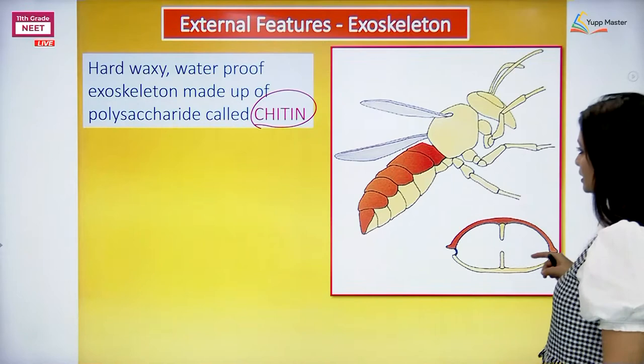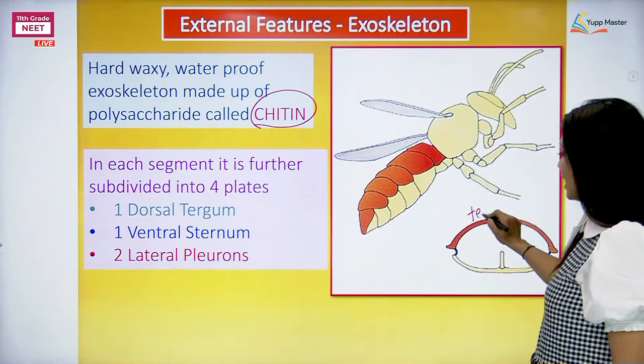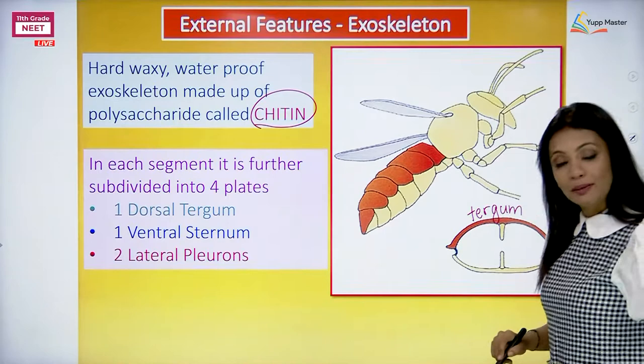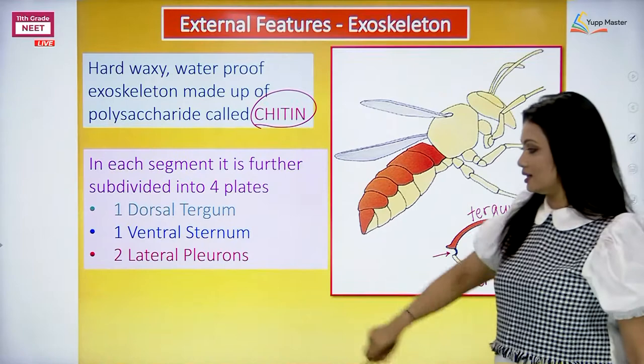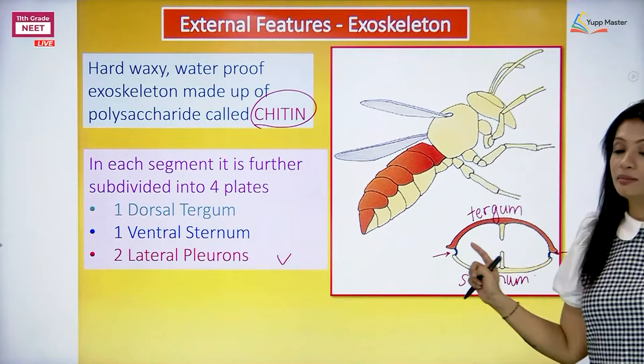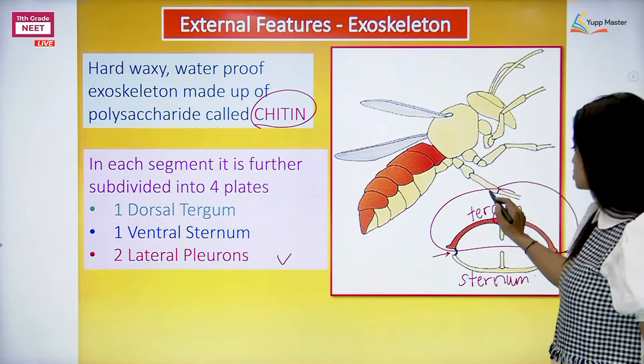When we talk about the exoskeleton - that is chitin - the dorsal part was called the dorsal tergum and the ventral part was called the ventral sternum. The lateral parts were called the lateral pleuron. When we're talking about the circulatory system, I'd like you to especially remember the dorsal tergum.